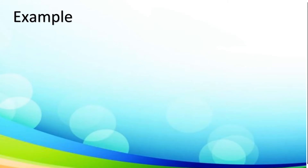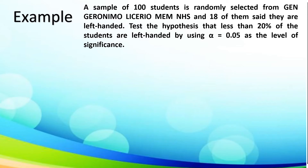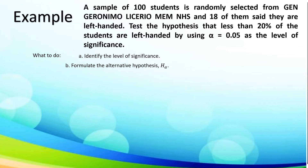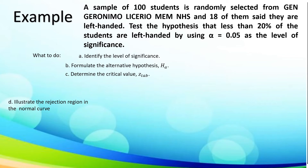Let's take another example. A sample of 100 students is randomly selected from General Geronimo Liserio Memorial National High School, and 18 of them said they are left-handed. Test the hypothesis that less than 20% of the students are left-handed by using alpha of 0.05 as the level of significance. We will: identify the level of significance, formulate the alternative hypothesis, determine the critical value or Z-tab, and illustrate the rejection region in the normal curve.